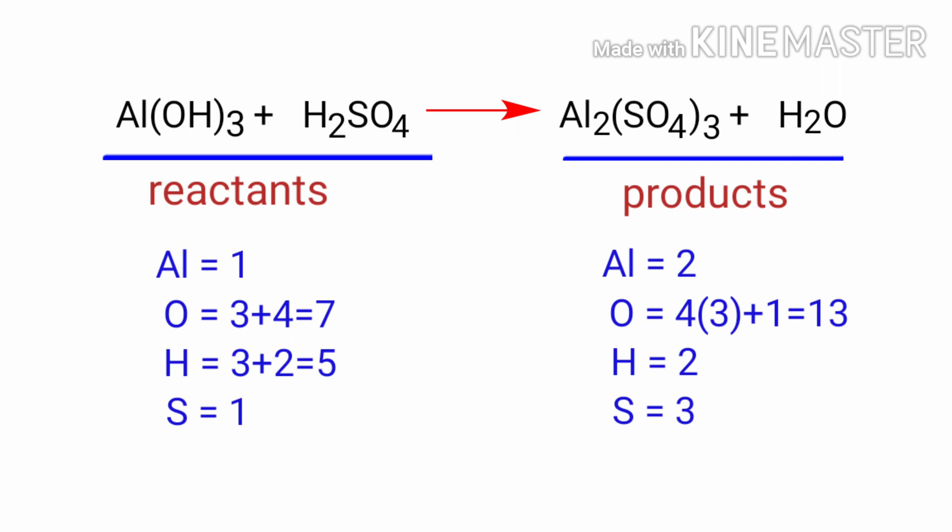In this equation, we need to balance the aluminum atoms first. To do this, we need to put a coefficient of 2 in front of Al(OH)₃. The aluminum atoms are balanced.